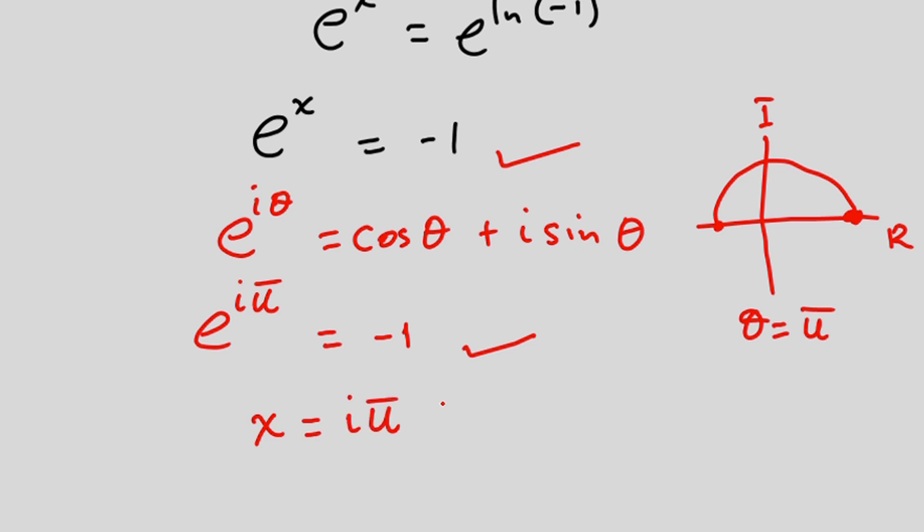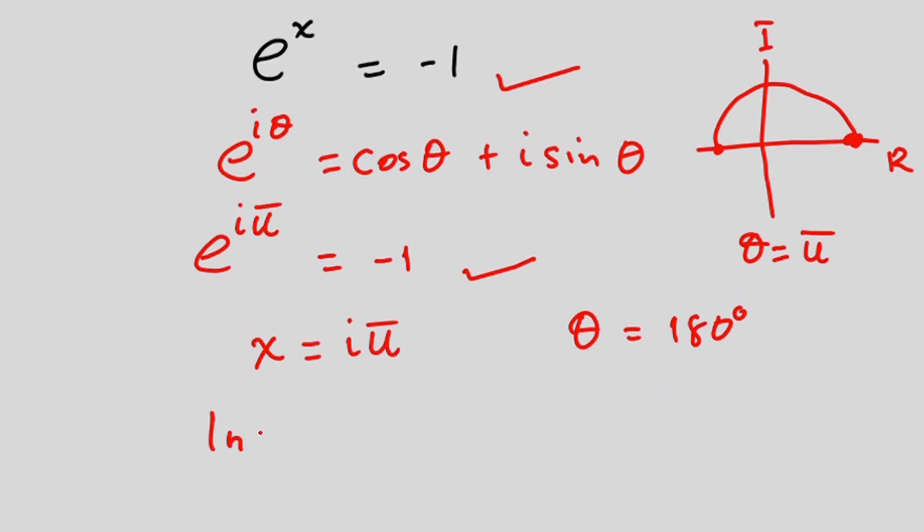So what about when θ is not equal to 180 but it is equal to other angles? So I'm going to leave it here for you to continue. So we can say with this one that ln(-1) is equal to iπ. But remember, this is not the only solution.